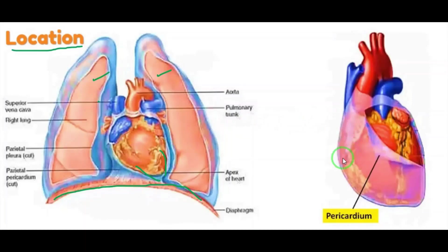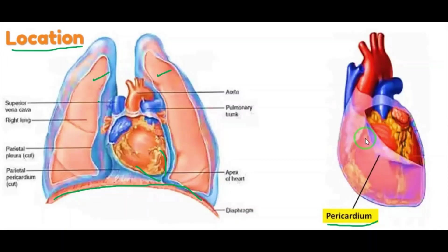In this diagram you can see the heart is covered with a double-walled sac. This outer covering or sac is known as the pericardium. The pericardium contains a lubricating fluid called pericardial fluid.